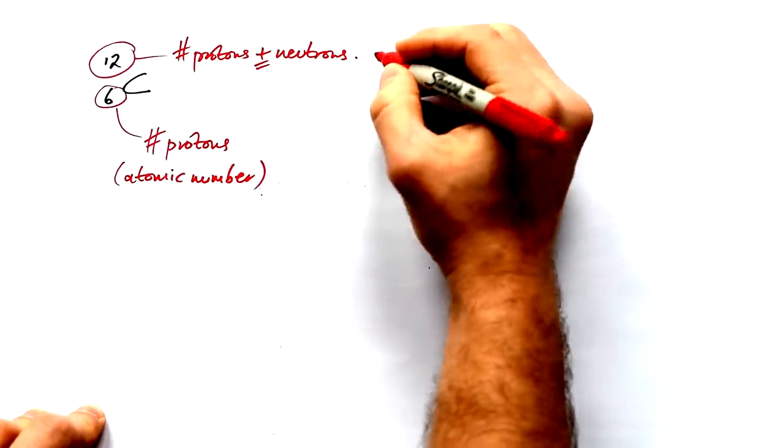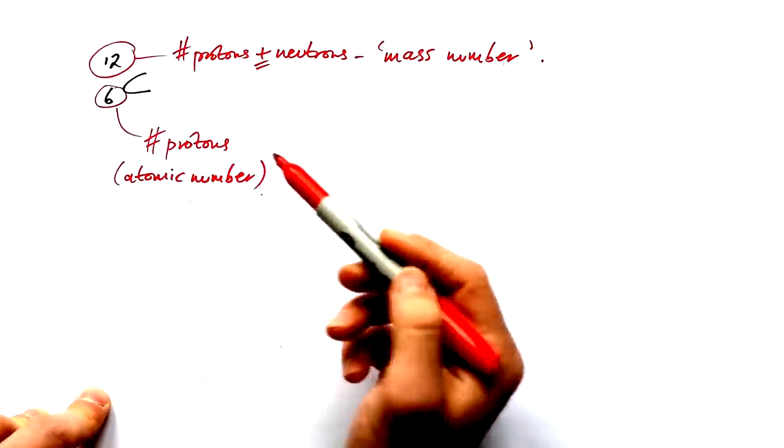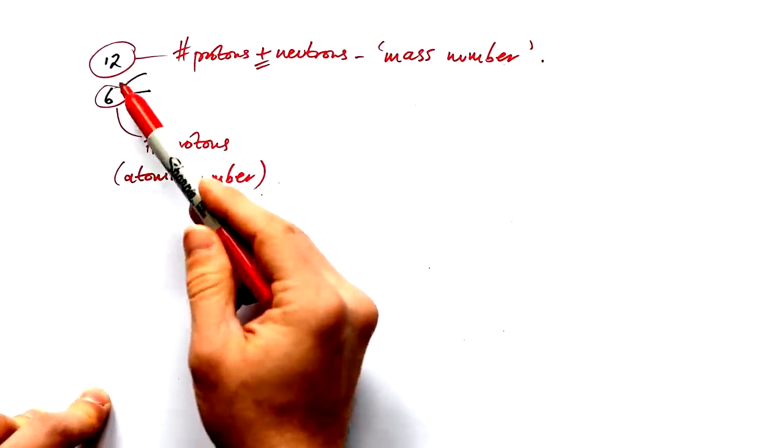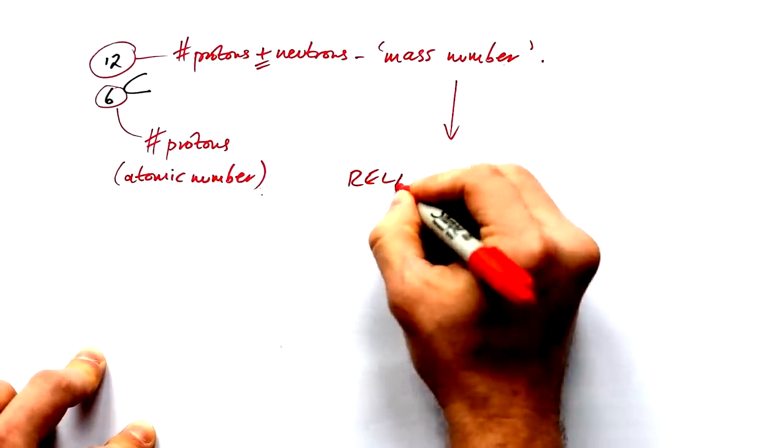This has its own special name. Sometimes you hear this called the mass number. And the way I remember which way around they are, is the mass number is the massive number out of the two. But the proper name for this is relative atomic mass.